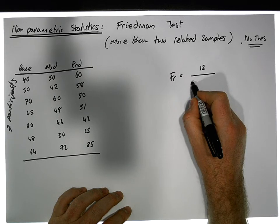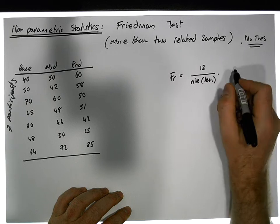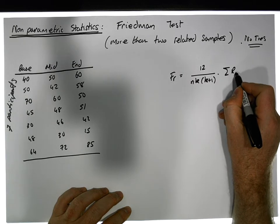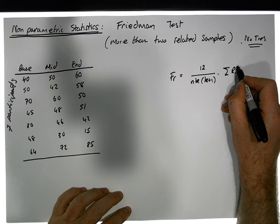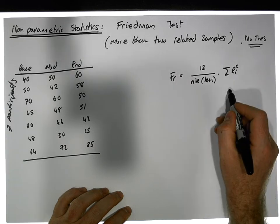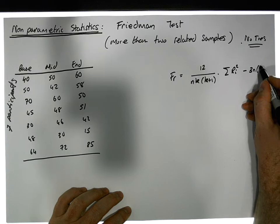divided by n times k times (k plus 1), times the sum of the ranks—the ranks for each group squared. So for each one of the groups, the sum of the ranks, minus 3 times n times (k plus 1).